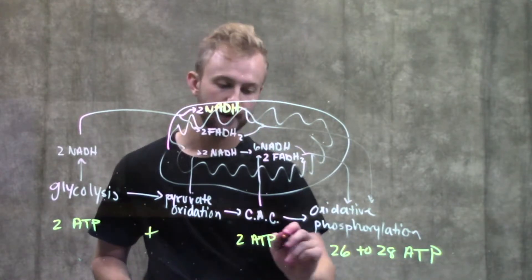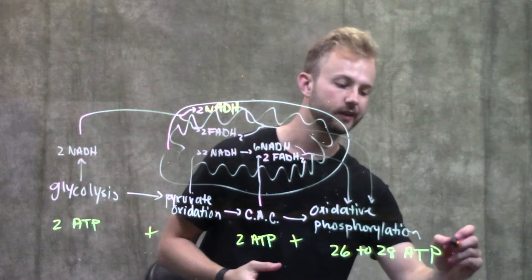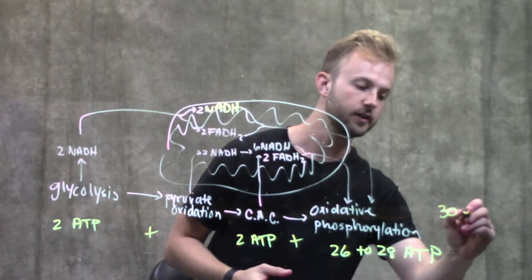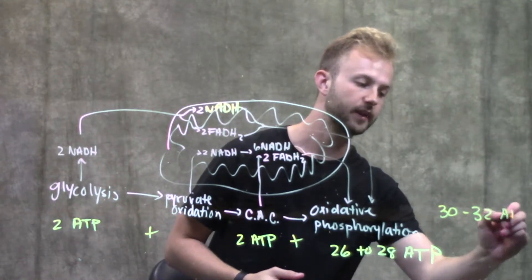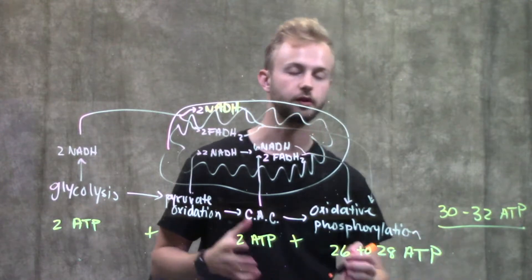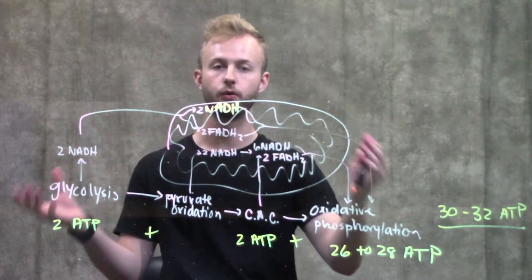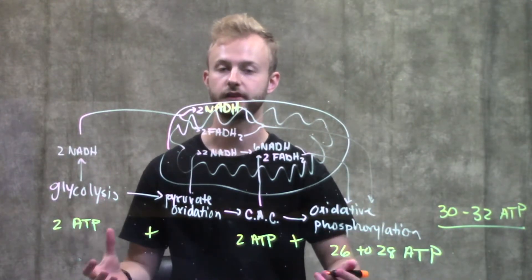When we add all of these up, we get somewhere between 30 and 32 ATPs for one molecule of glucose through the whole process of cellular respiration.